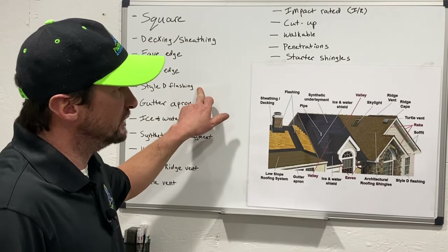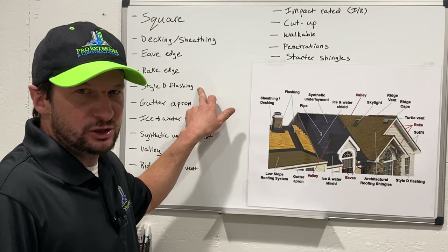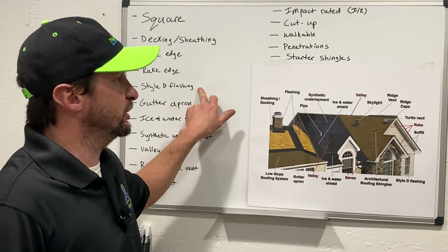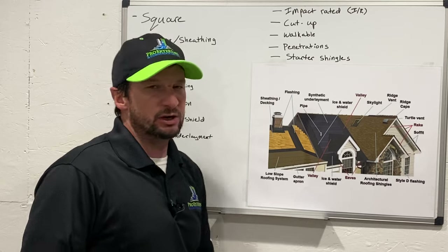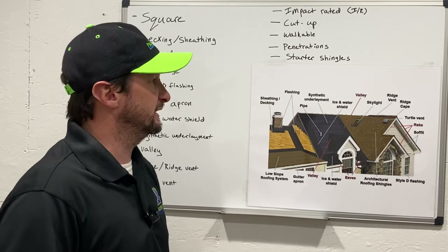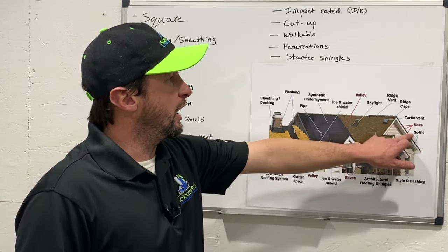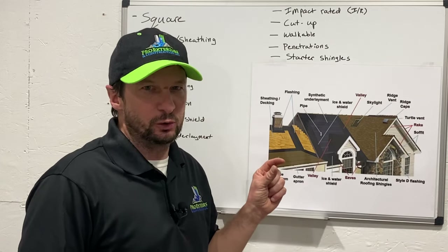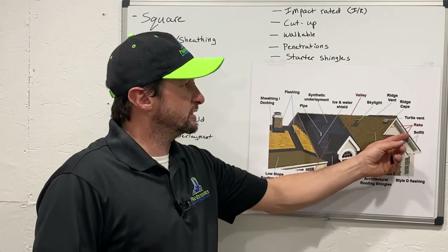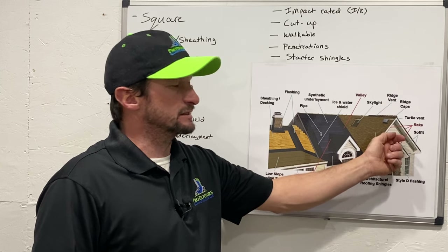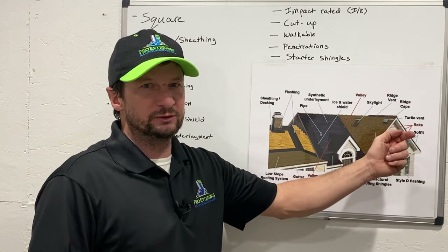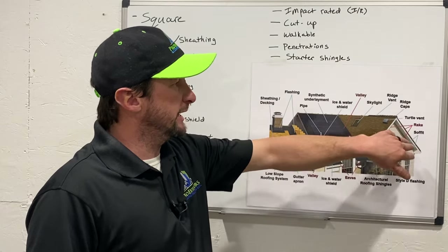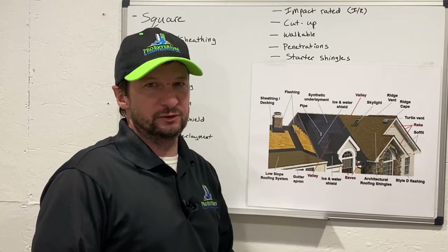Next is style deflashing — that's a somewhat regional term. Some people call it drip edge flashing, but around here it's primarily called style deflashing. It goes on your rake edge and has about a one-inch lip on it, which allows your shingles to extend slightly over the edge of the roof to prevent driving rain from getting in and causing a leak.